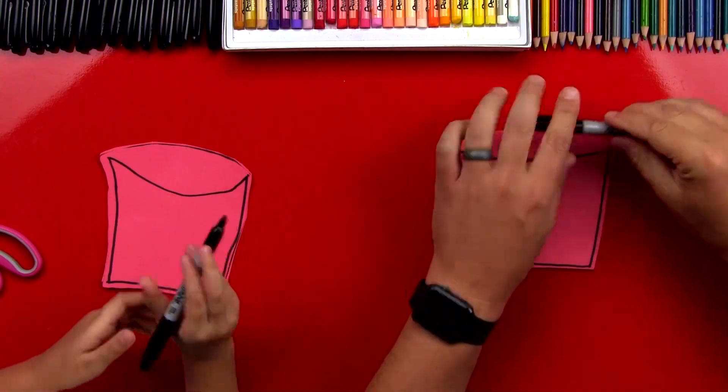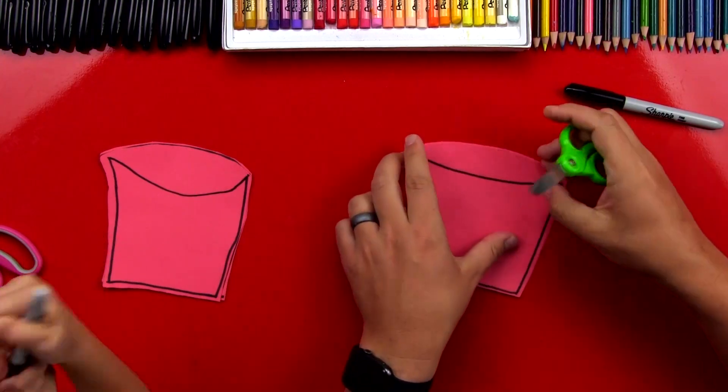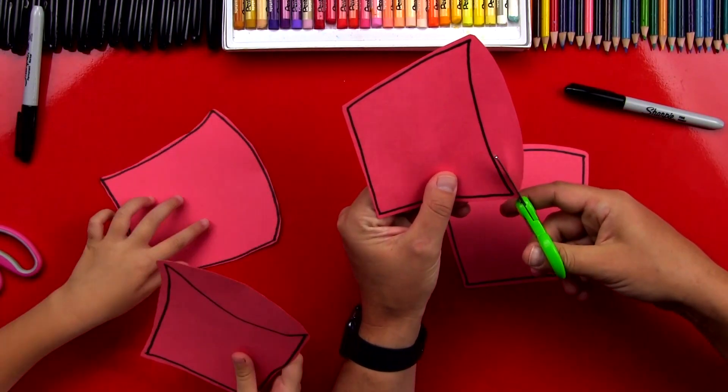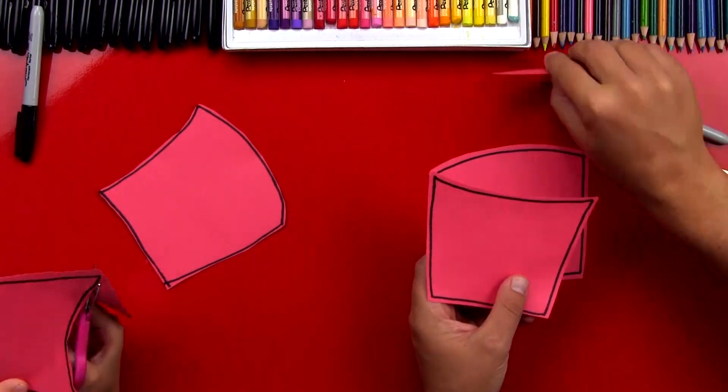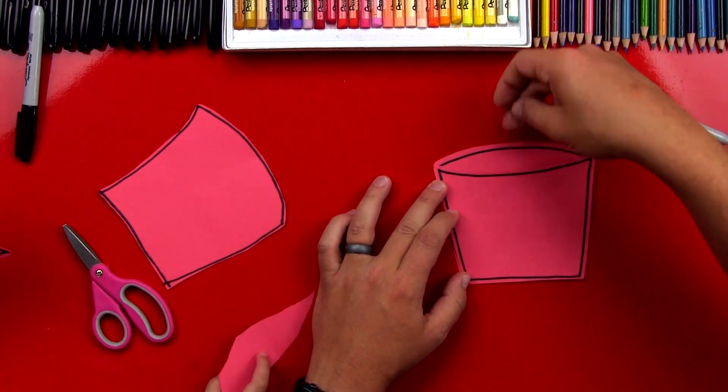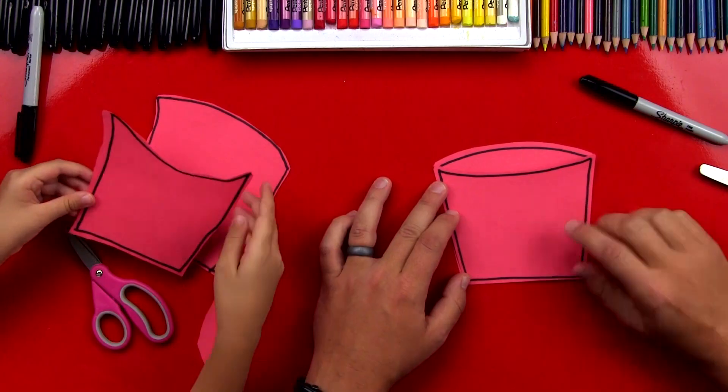Now we'll put our markers down, we'll get our scissors. And we're just going to take this top sheet and we're going to cut off that extra red. Now when we lay this on top it looks like our french fry box, and we're going to be able to put the french fries in the top. Is that cool? Yeah.